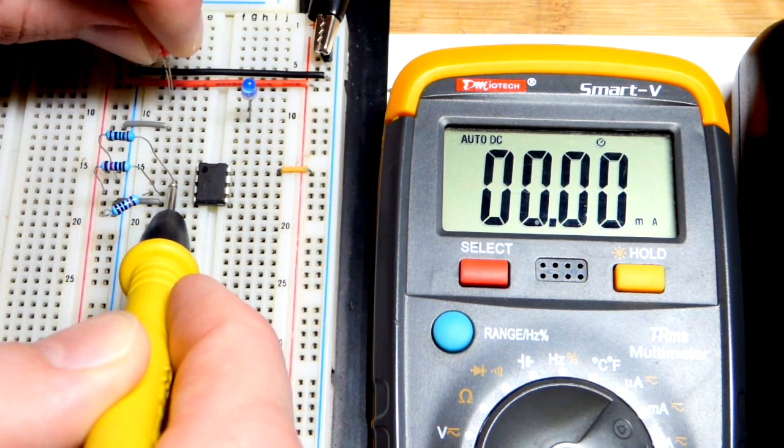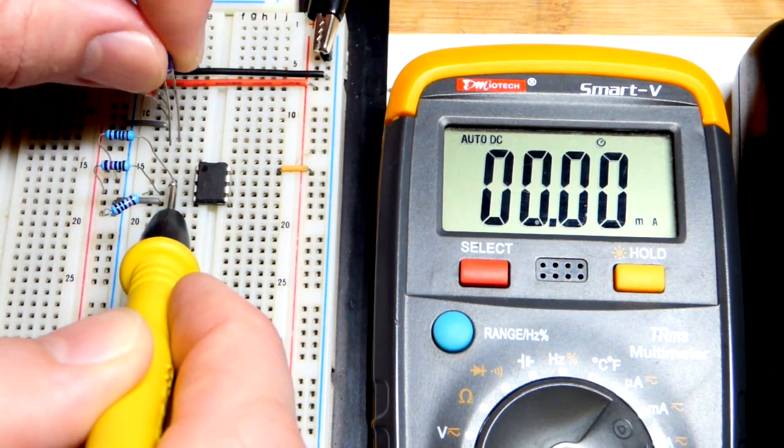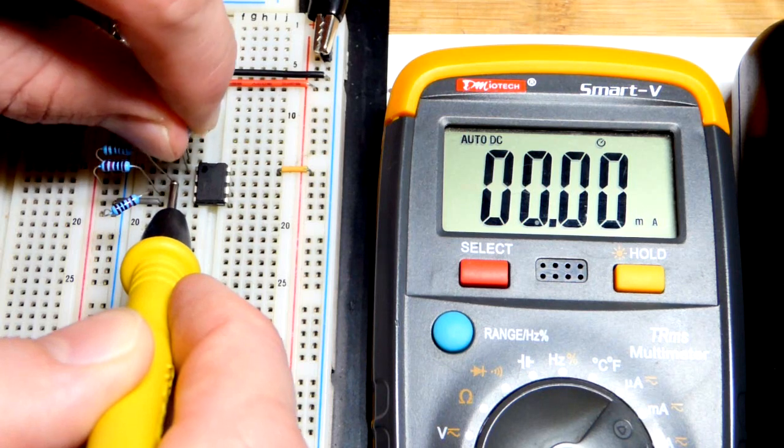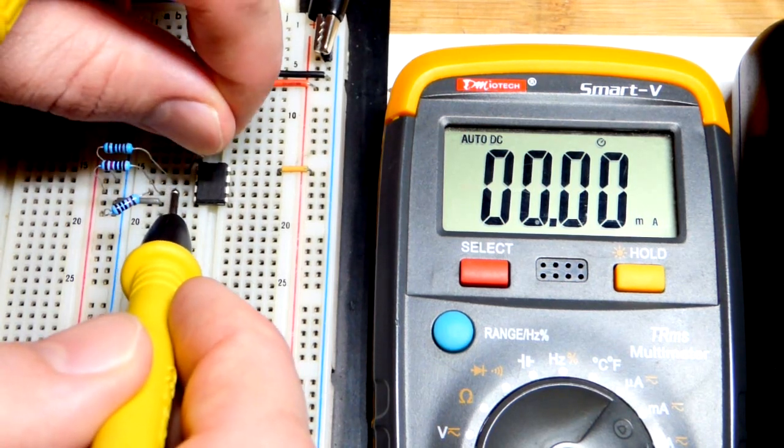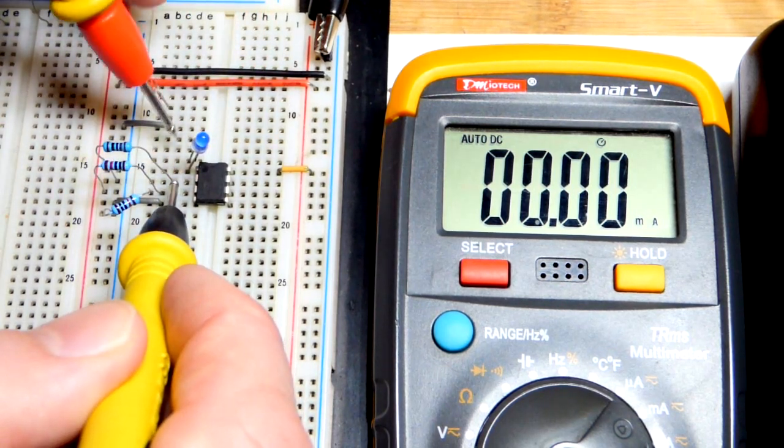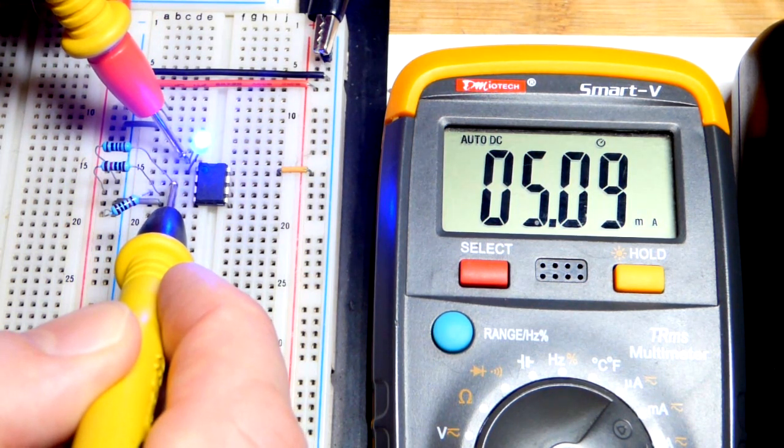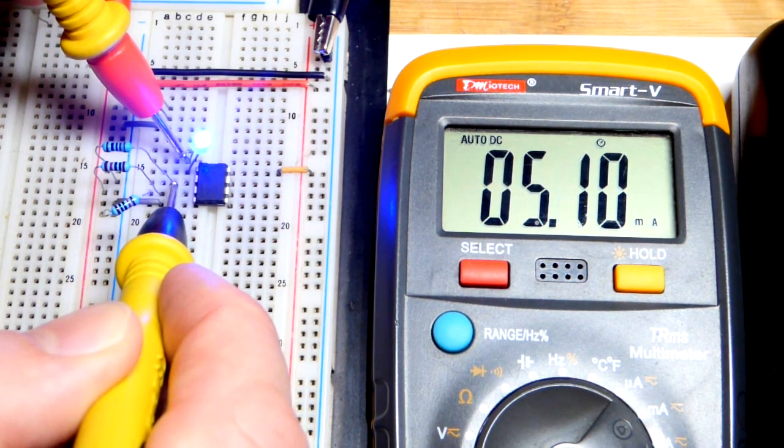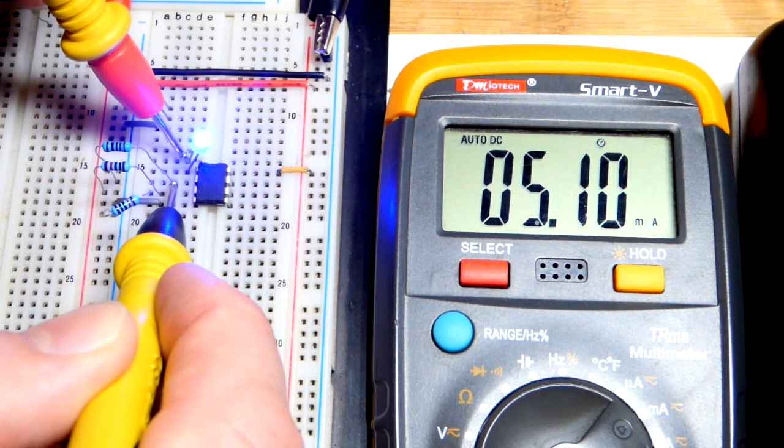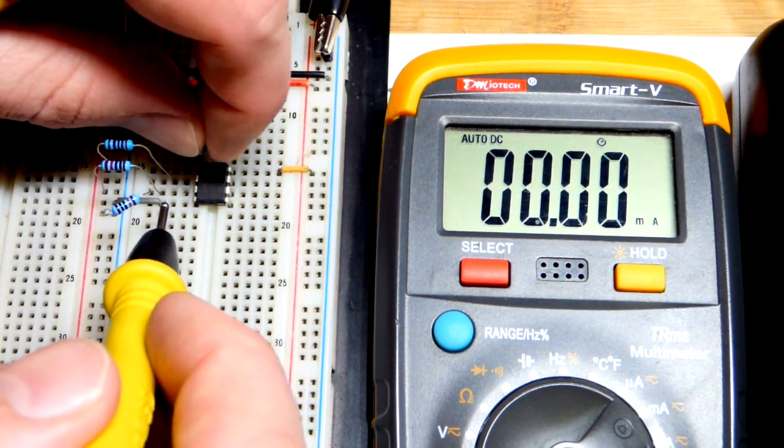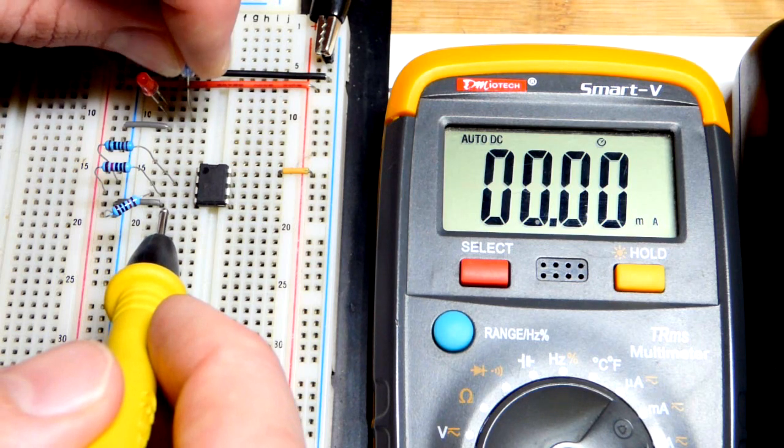Usually if you swap a red LED for a blue LED, make sure we put it in the right way or else it won't light up, usually you lose some current because it drops more voltage. But as you'll see here, it's not perfectly the same, but it's pretty close. It's spot on the same right there.